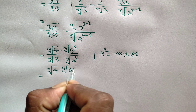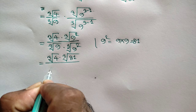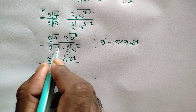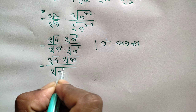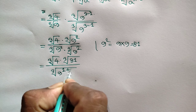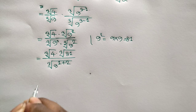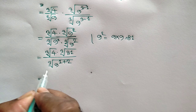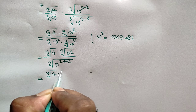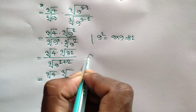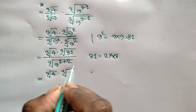So we get 81 in the numerator. We can write cube root of 9 times 9, that means 9 to the power 1, so we can write 9 to the power 1 plus 2 in the denominator.